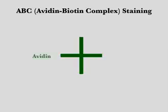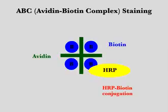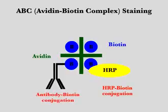The most common form of indirect immunohistochemistry is avidin-biotin complex staining. Avidin protein and biotin have a strong binding affinity, and each avidin molecule has four binding sites for biotin. When biotin binds to avidin, they form the avidin-biotin complex. Biotin molecules can exist freely, but in immunohistochemistry they are often conjugated to peroxidases, such as HRP, or to secondary antibodies, as shown.